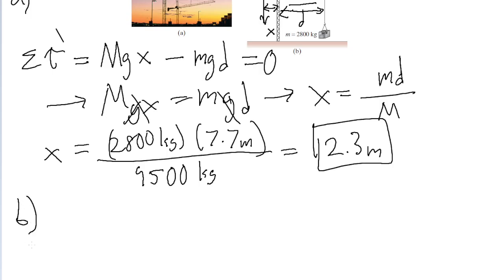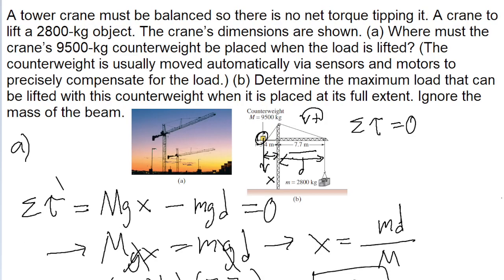But now for part B. Now part B asks, the part B of the problem asks for the maximum load that can be lifted if the counterweight is all the way at the leftmost edge of the counterweight balance. So you kind of can't see the diagram very well now because of my scribblings. But this says 3.4 meters. So what this is asking is how much mass can we lift if the counterweight is 3.4 meters away from the pivot point?